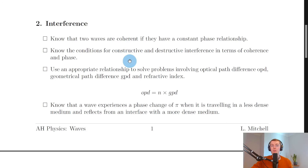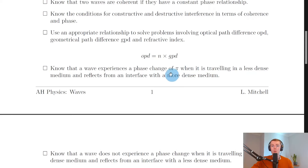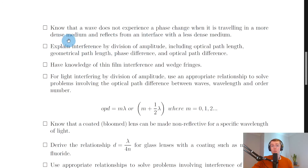You can also describe interference in terms of crests and troughs: constructive interference occurs when a crest meets a crest or a trough meets a trough, and destructive interference occurs when a crest meets a trough. You also need to use the relationship for optical path difference (OPD), geometrical path difference (GPD), and refractive index, where OPD equals refractive index times GPD. Additionally, a wave experiences a phase change of π radians when travelling in a less dense medium and reflecting from an interface with a more dense medium, such as going from air to glass, but no phase change occurs when reflecting from a less dense medium.